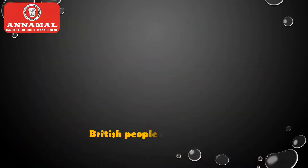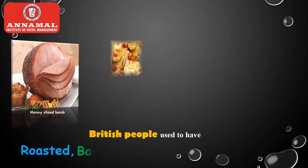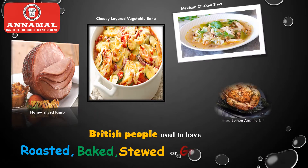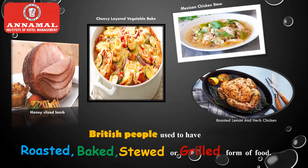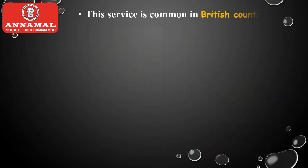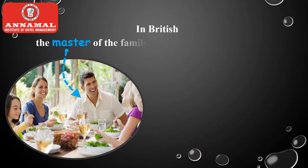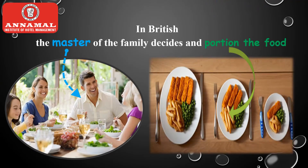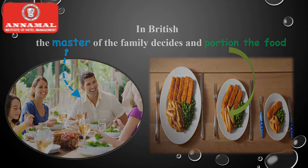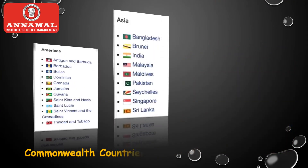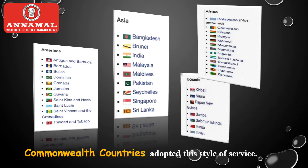British people used to have roasted, baked, stewed, or grilled forms of food. This form of food requires portioning. English service is common in British countries. In Britain, the master of the family decides and portions the food for the family members. Commonwealth countries adopted this style of service.